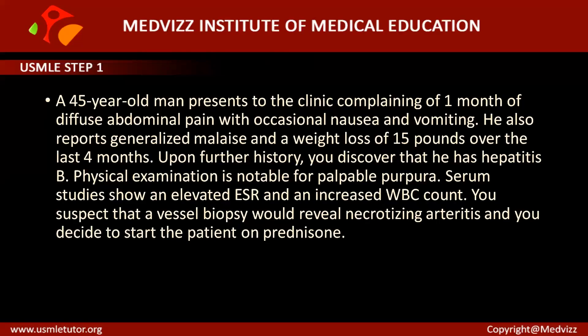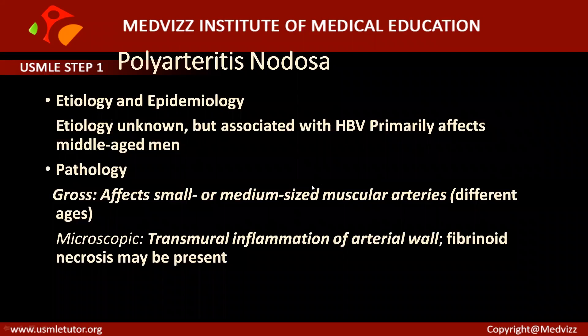Physical examination is notable for palpable purpura. Serum studies show elevated ESR — which is always a marker for chronic inflammation — and increased WBC count. You suspect that a vessel biopsy would reveal necrotizing arteritis, and you decide to start the patient on prednisone. This case is about polyarteritis nodosa (PAN).